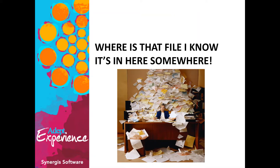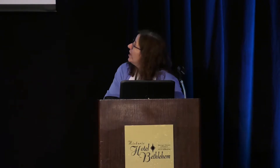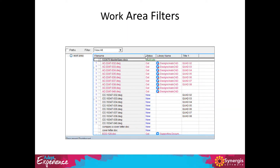Elaine introduces another tip: work area filters, useful when a user has a massive work area — for example, an Inventor assembly with thousands of parts, plus Word documents and Excel files. At the top of the work area there's a filter option currently set to 'View All.' Clicking the arrow expands two options: 'View Only Selected' and 'Exclude Selected.' These are used in opposite ways.